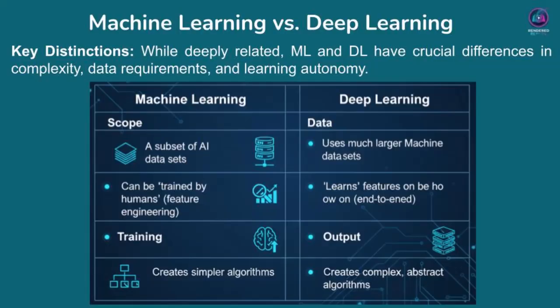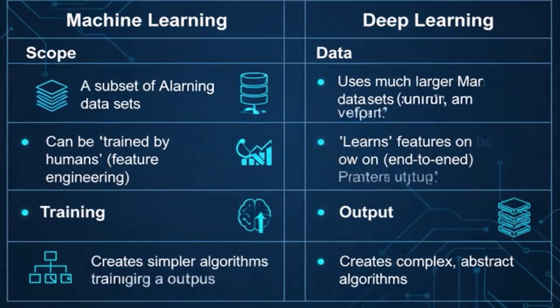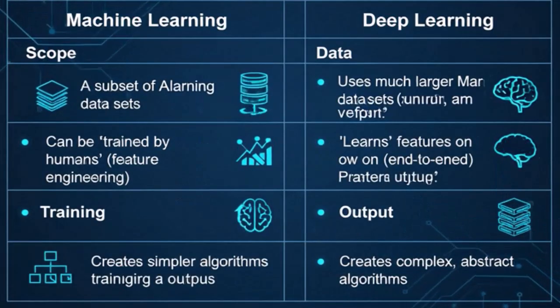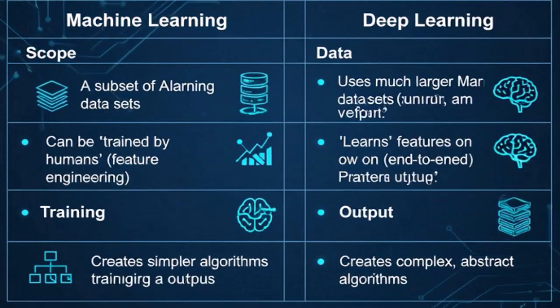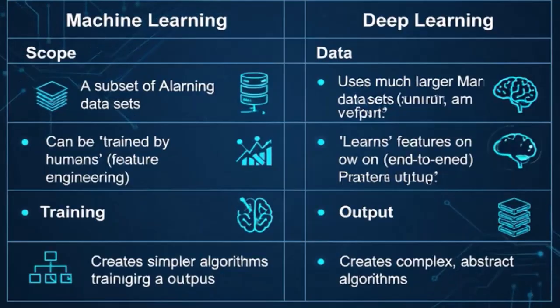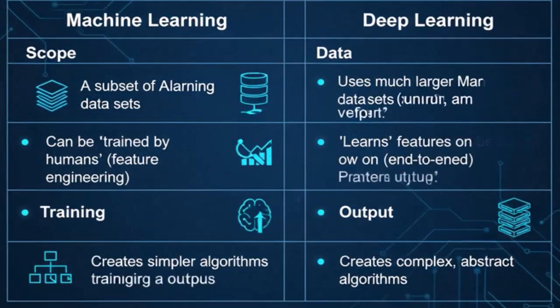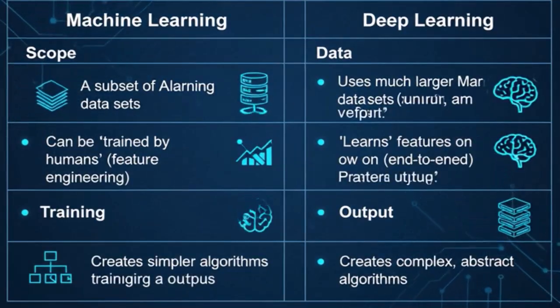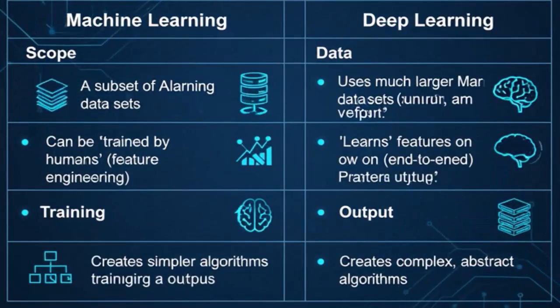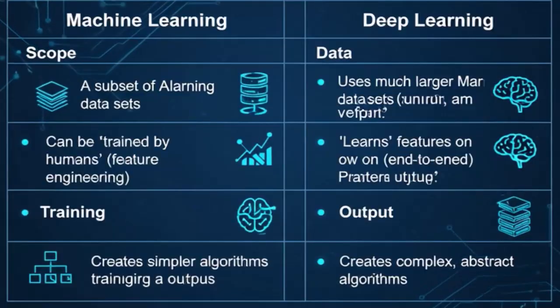First, consider the scope. Machine learning is a broader subset of AI encompassing many different algorithms and approaches. Deep learning, however, is a more specialized subset within machine learning, specifically focused on neural networks with many hidden layers.